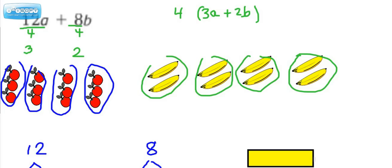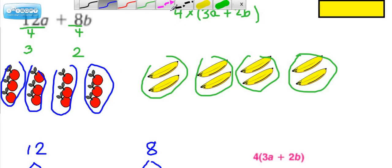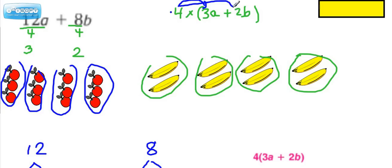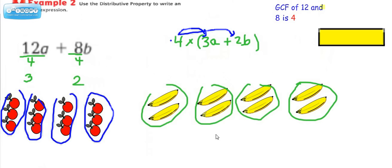Therefore, an equivalent expression is 4 times (3a plus 2b). If we multiply this out and do 4 times 3a, wouldn't we get 12a? And if we did 4 times 2b, wouldn't we get 8b? This is really the same — we haven't changed the number of apples and bananas, we still have the same number; we're just regrouping it.